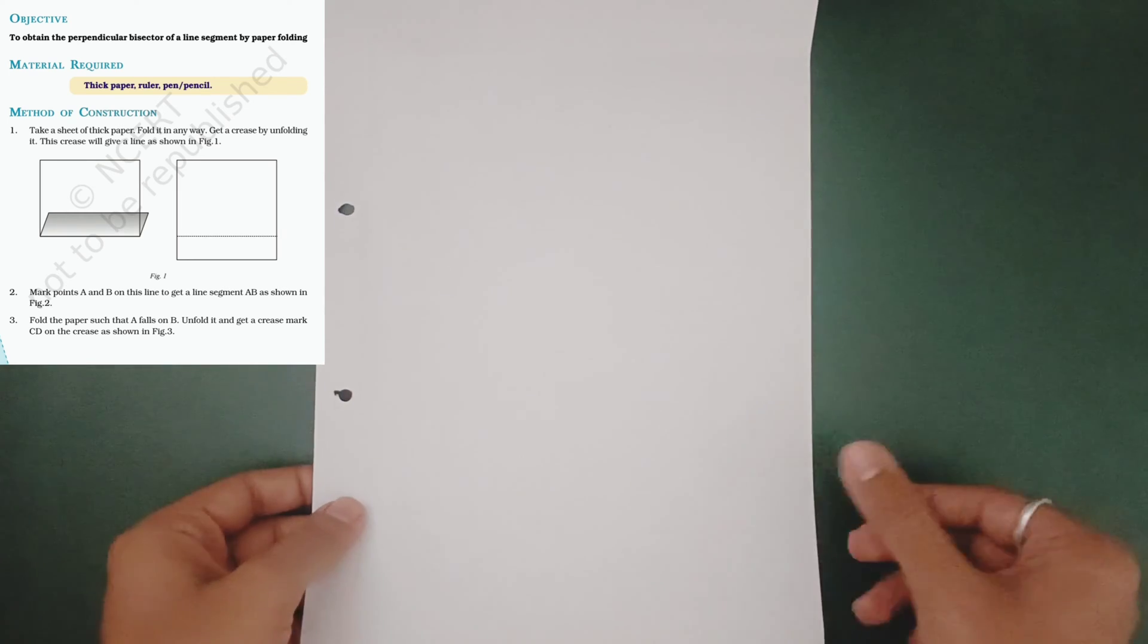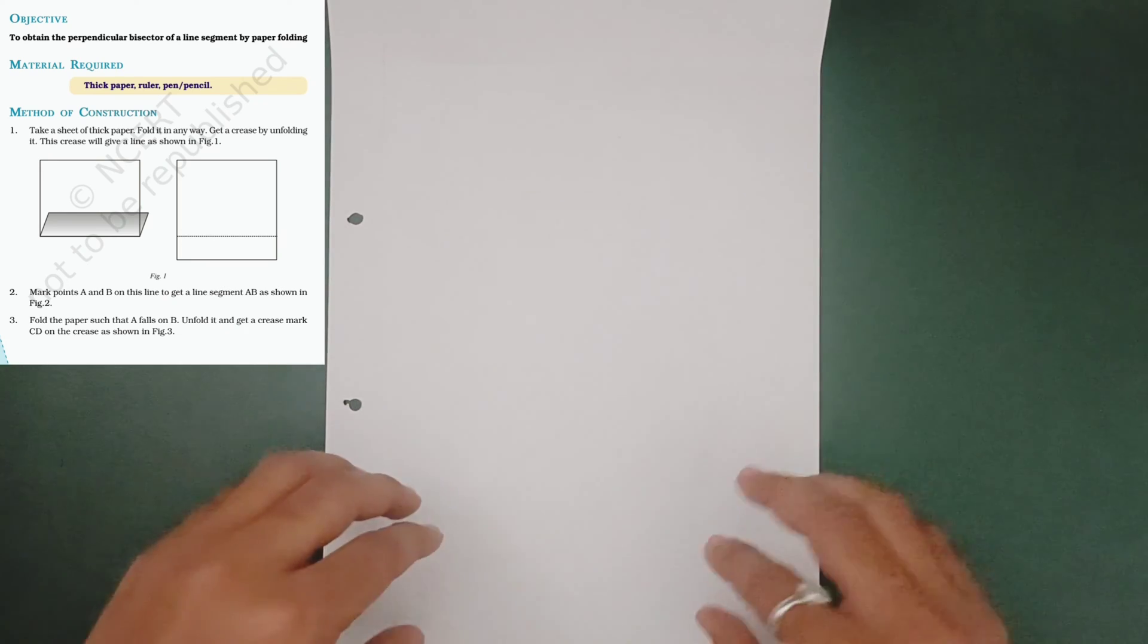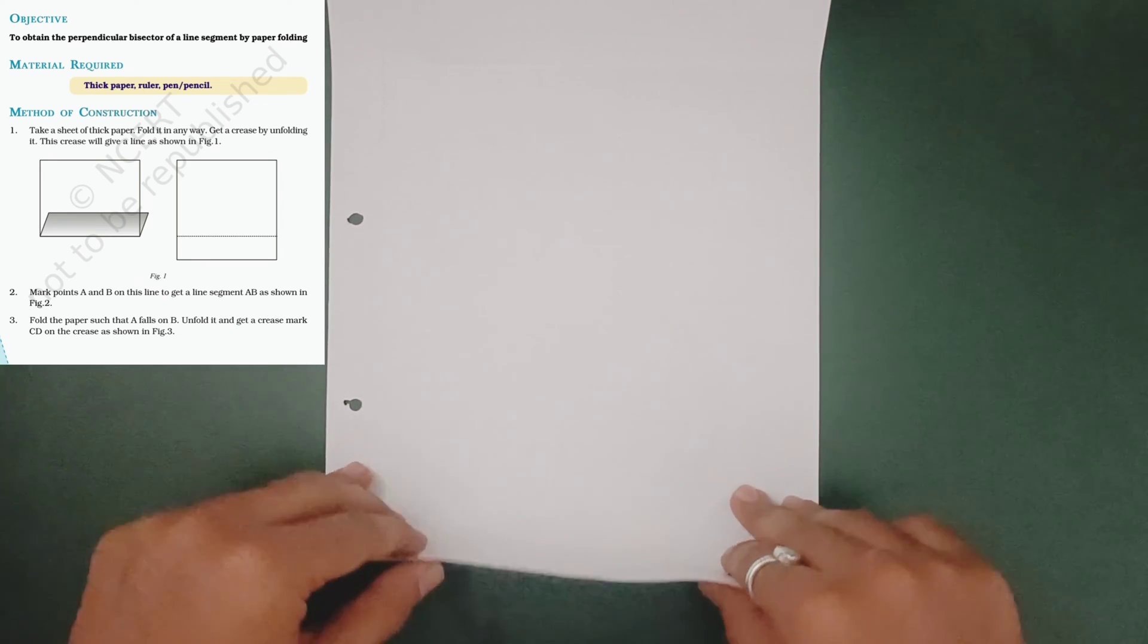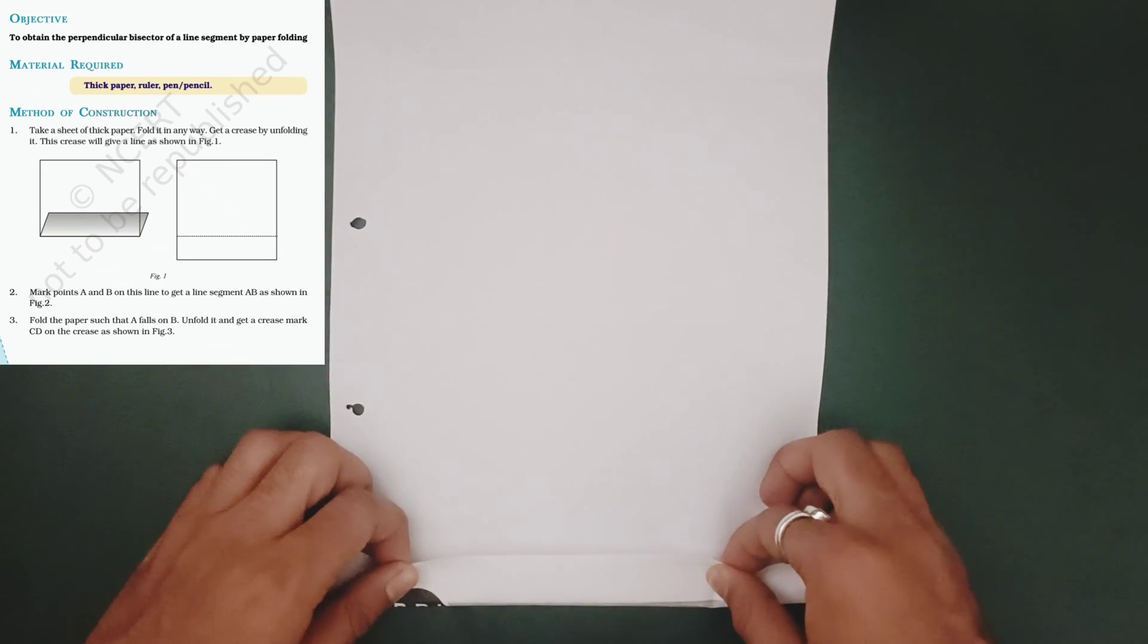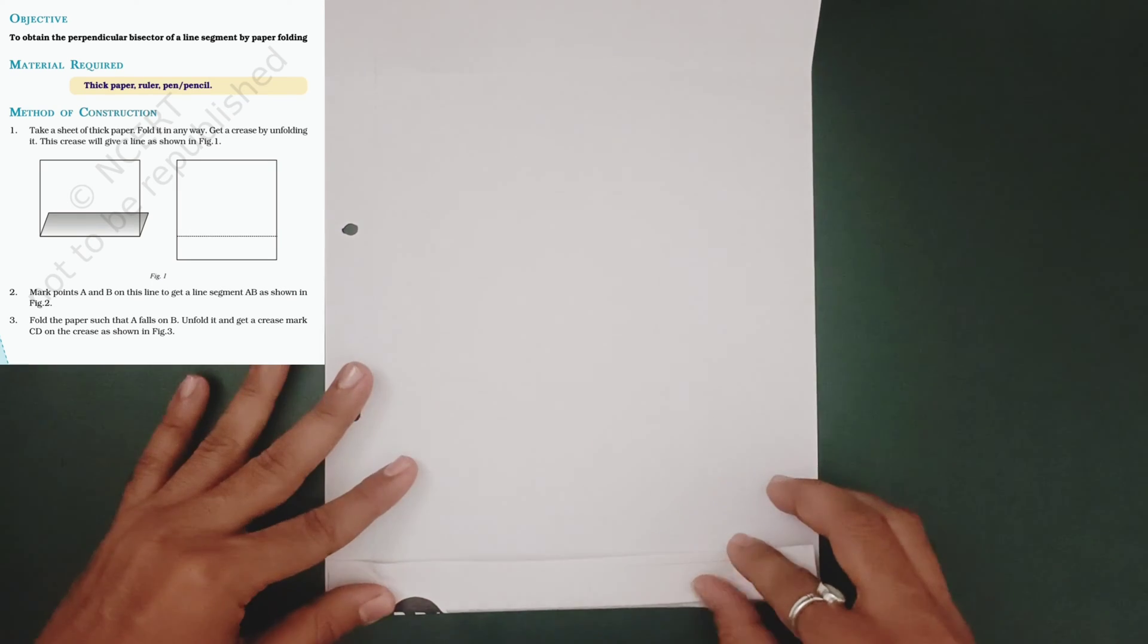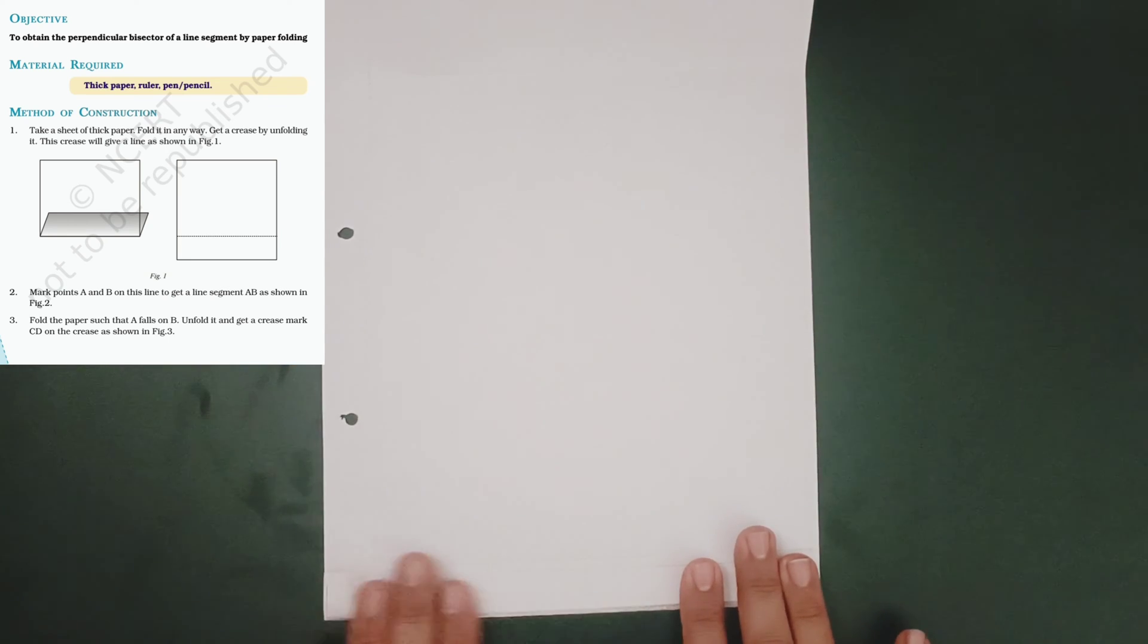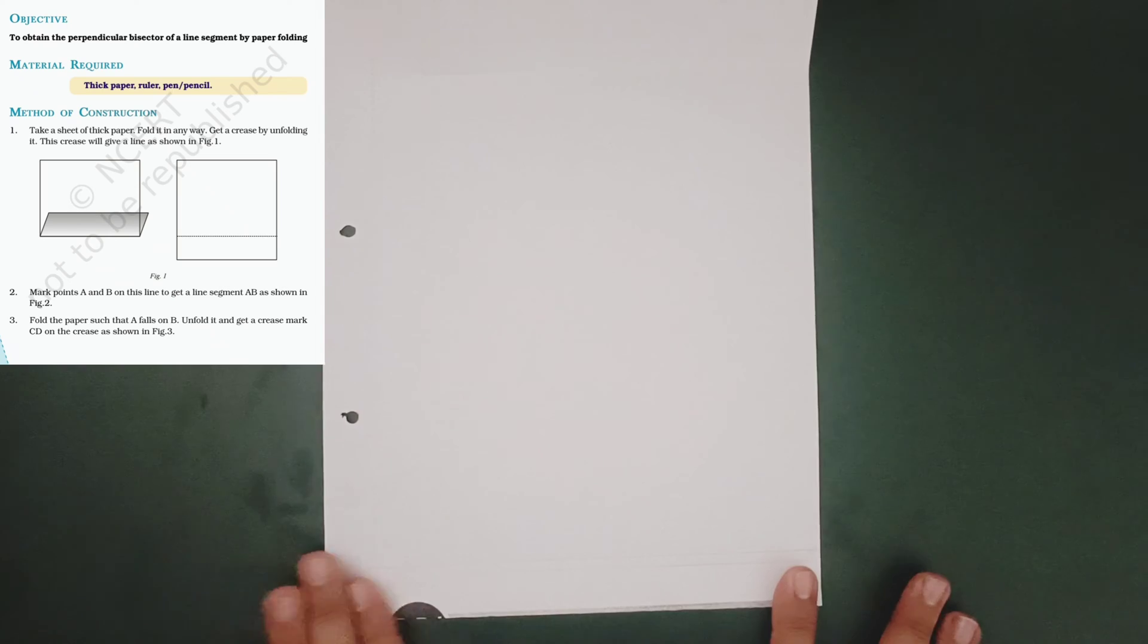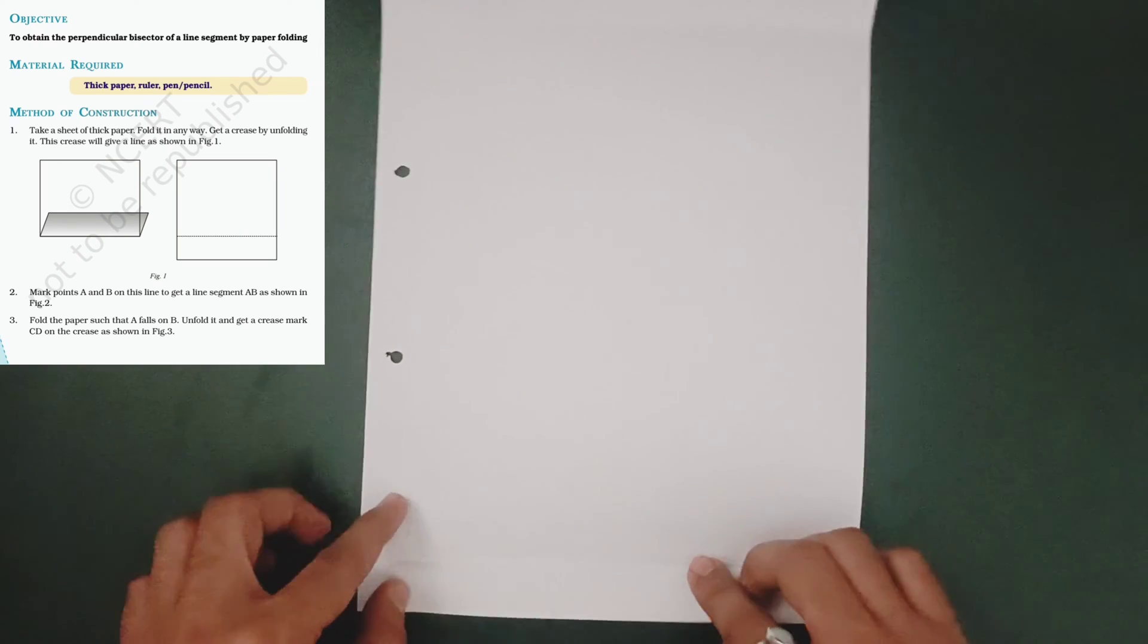Take a sheet of paper and fold it anywhere to get a crease. Just unfold it - have you seen this is a line?